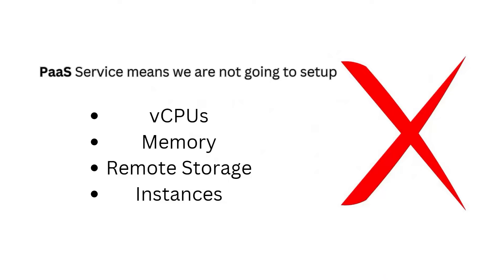So who will be provisioning this infrastructure for us? We will not be creating all these things. Azure will take care of creating and managing these things for us. In summary, App Service is a PaaS offering for hosting our applications in Azure, and it will take care of the infrastructure. But the next question is: how does Azure know how much infrastructure our application needs? Some applications need less CPU and memory, some need more.